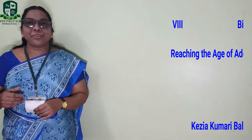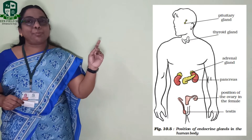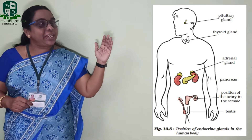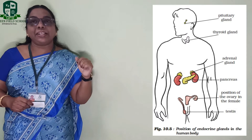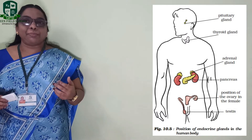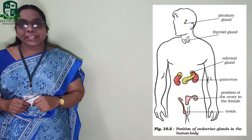Good morning children, welcome to today's biology class. In the last class we discussed about the different types of endocrine glands. Out of the eight endocrine glands, we already completed two. Look at this picture to see how these endocrine glands are located and arranged in the human body. The first one we studied is the pituitary gland, which is located in the ventral side of the brain.